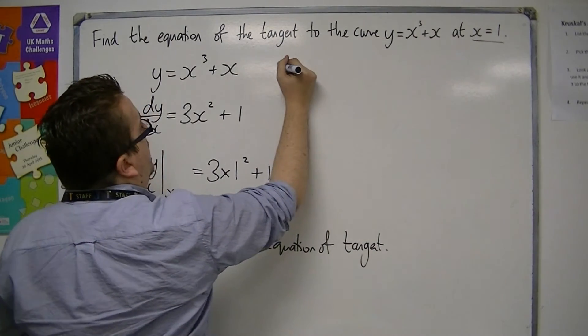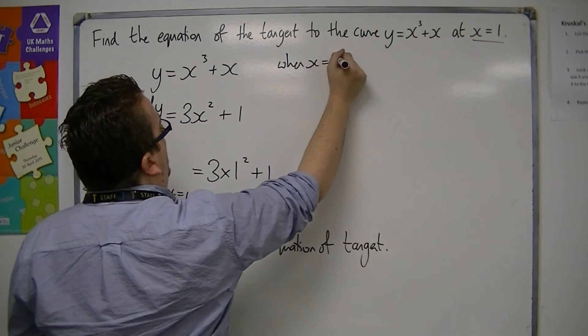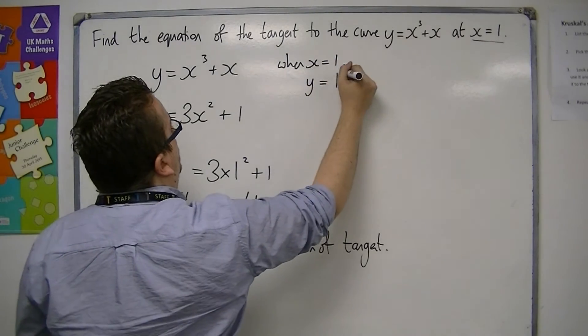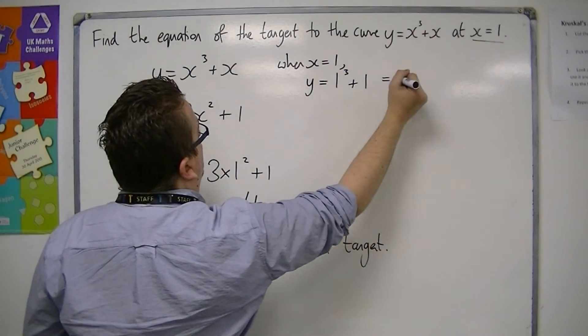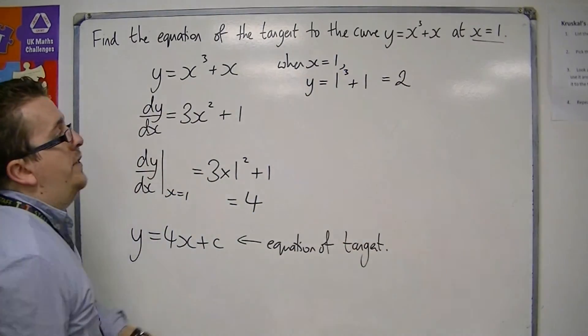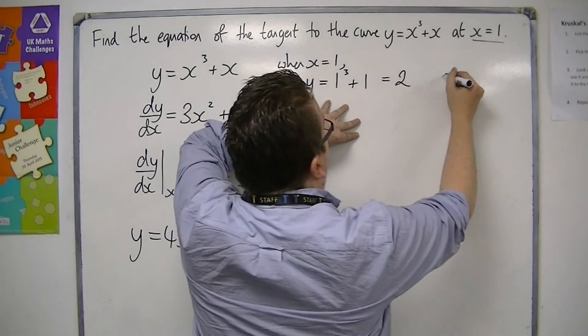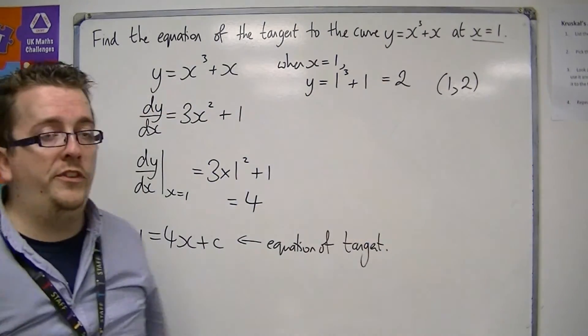So when x equals 1, y is equal to 1 cubed plus 1, which is 2. So this tells me that the coordinate that I'm looking at is 1, 2.